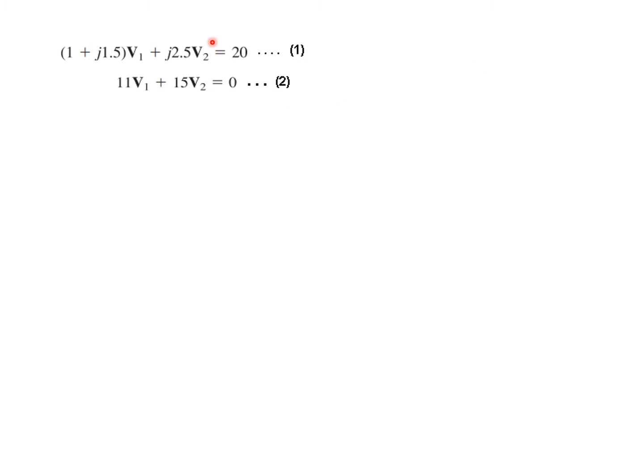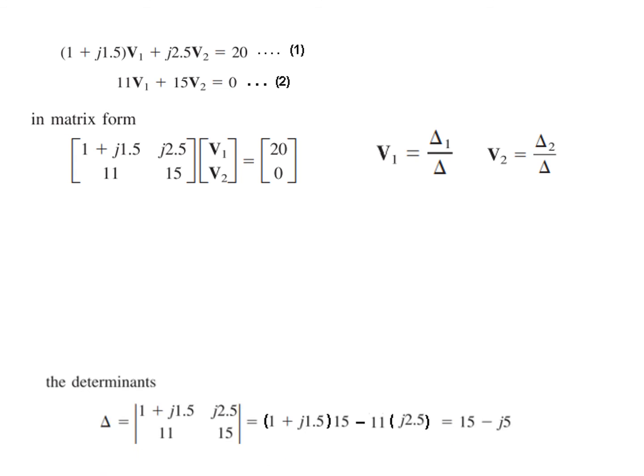Now that we have two equations, we can solve easily to find v1 and v2. The best way is to use the matrix method. We have all the coefficients written in matrix form. From the matrix equation, we know v1 equals delta 1 over delta, and v2 equals delta 2 over delta.